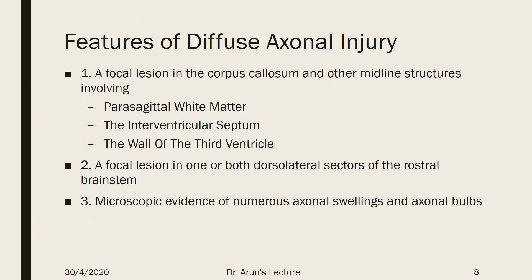The classical features of diffuse axonal injury include: a focal lesion in the corpus callosum and other midline structures; focal lesions in one or both dorsal-lateral sectors of the brainstem; and microscopic evidence of numerous axonal swellings and axonal bulbs. In fatal head injury, axonal swellings and axonal bud changes are almost always found. These are identified by microscopic evidence, not by morphological or naked eye examination.